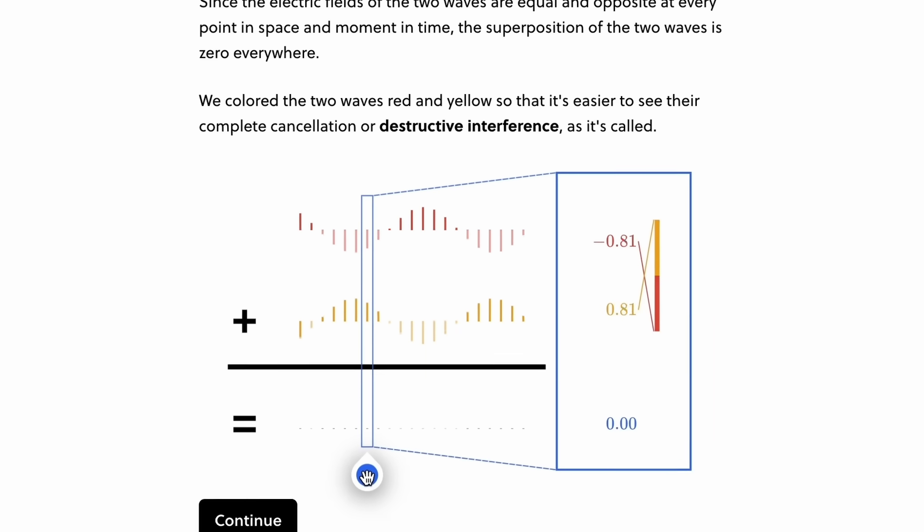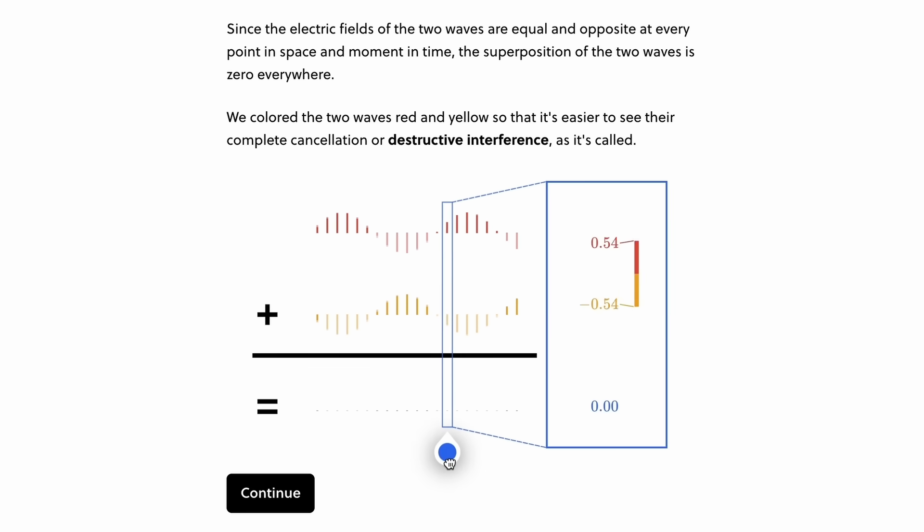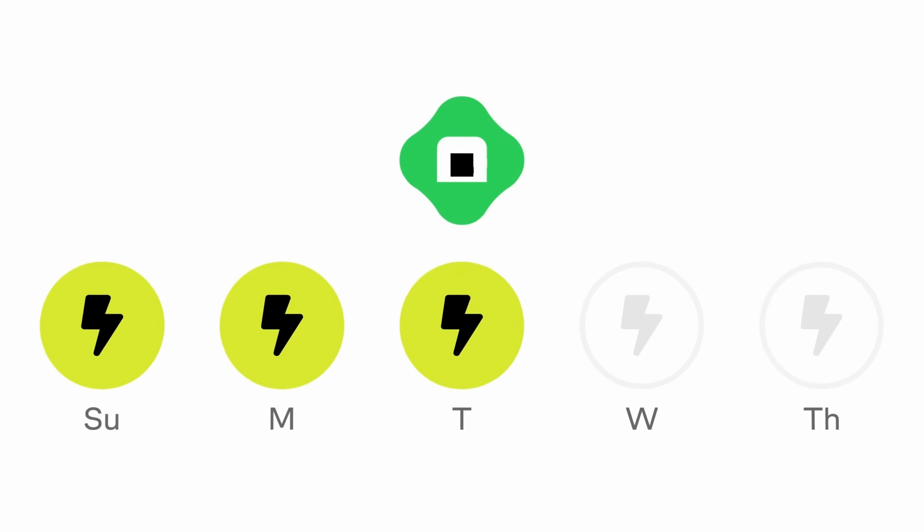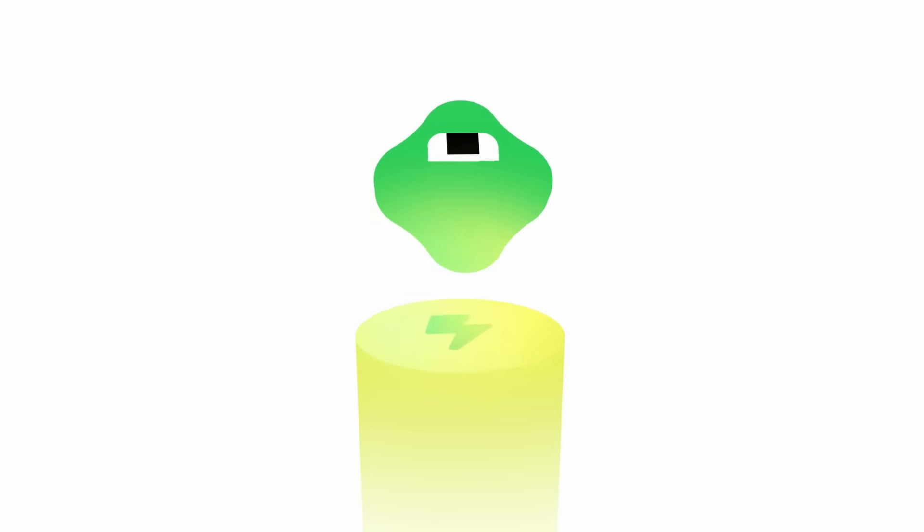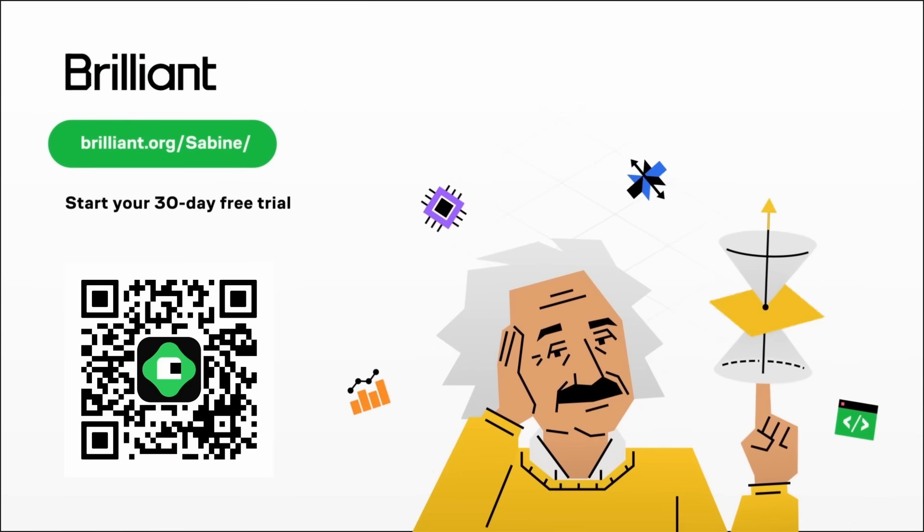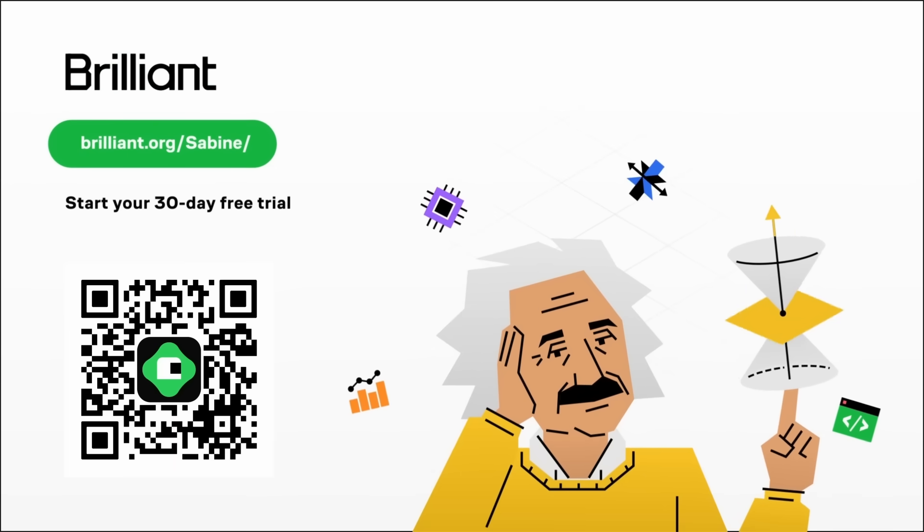It also covers interference, the uncertainty principle, and Bell's theorem. And after that, you can continue maybe with their course on quantum computing or differential equations. If that sounds good, you can try it for free. Just use my link brilliant.org or scan the QR code and you'll get to try out everything Brilliant has to offer for 30 days. And you'll get 20% off the annual premium subscription. So go and check this out. Thanks for watching. See you tomorrow.